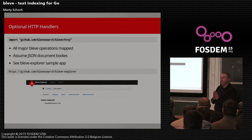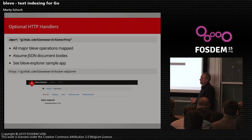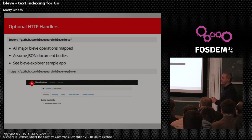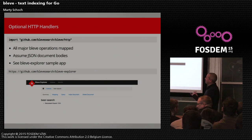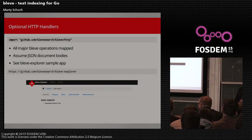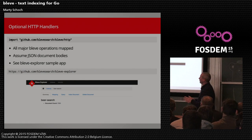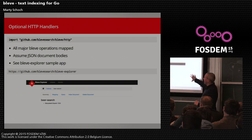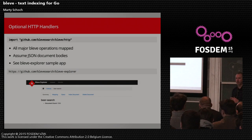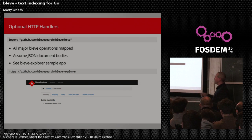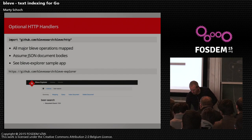We also have optional HTTP handlers in a separate package. Basically all the major operations in Bleve are mapped to these, so it's really easy to set up a server and expose this functionality. They assume document bodies are JSON and just use standard JSON serialization and deserialization to put those into the index. We also have a sample app called Bleve Explorer, which gives you a point-and-click GUI to play around with it — a great way to get started in a more visual way.